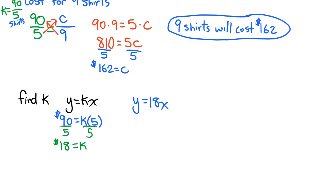So in this particular case, we want to know how much it will cost if we were to purchase 9 shirts. And so we can say 18 times 9 is $162.